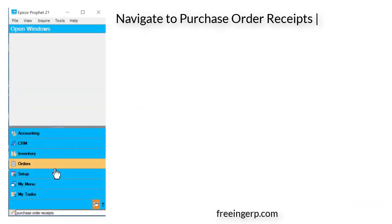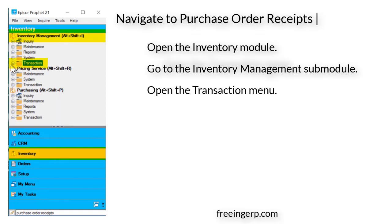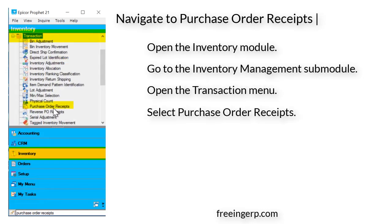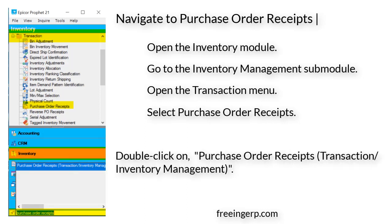To navigate to purchase order receipts, open the Inventory module. From there, go to the Inventory Management submodule, then open the Transaction menu and select Purchase Order Receipts — you may have to scroll down to find it. Another, usually easier option is to go to the search bar and type in 'purchase order receipts.' When the results load, double-click on Purchase Order Receipts Transaction / Inventory Management.